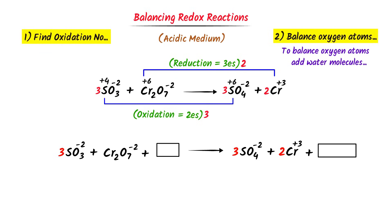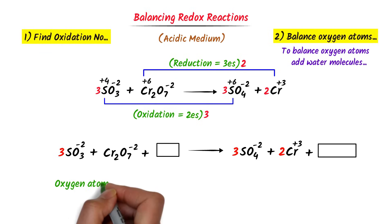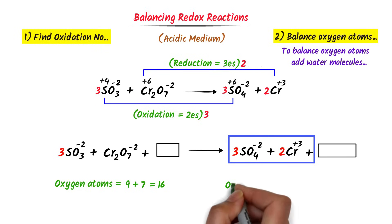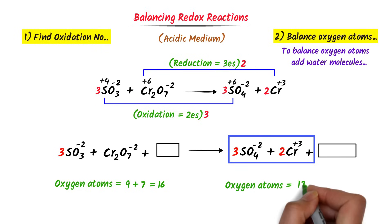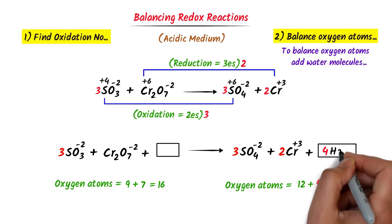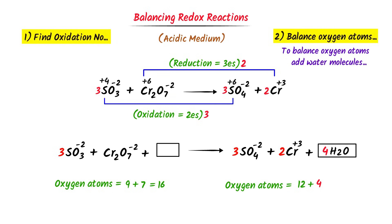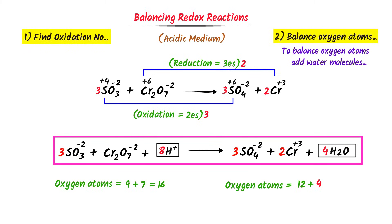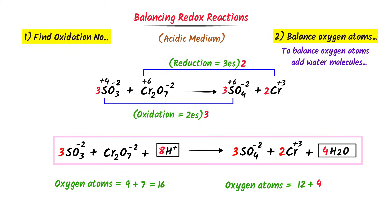The second step is to balance the oxygen atoms. In the reactants: 3×3 = 9 plus 7 = 16 oxygen atoms. In the products: 3×4 = 12 oxygen atoms. We need 4 more oxygen atoms, so I place 4 molecules of water on the product side. I double the number and place 8 hydrogen ions. So this is the complete balanced redox reaction. You should check it and drop your answer in the comment box.